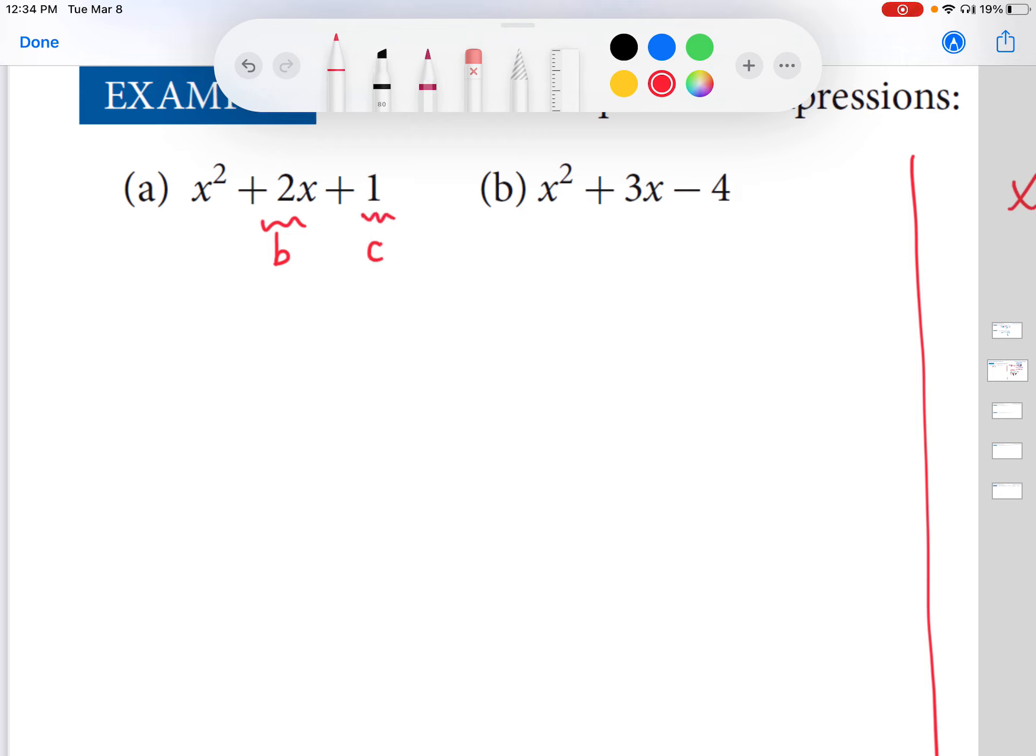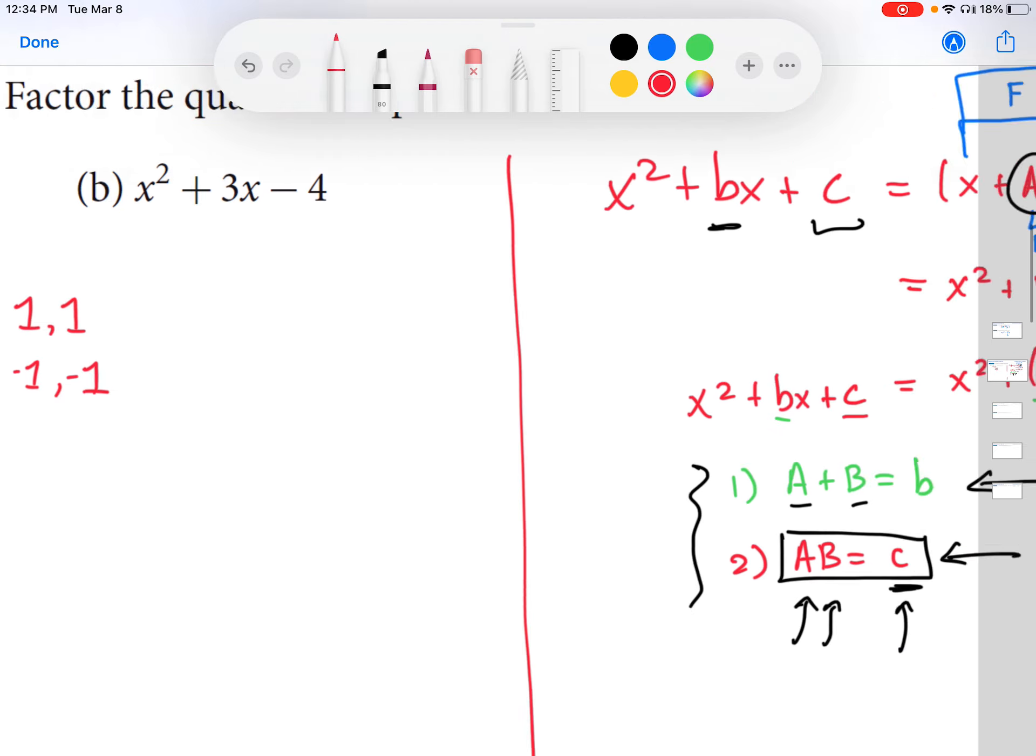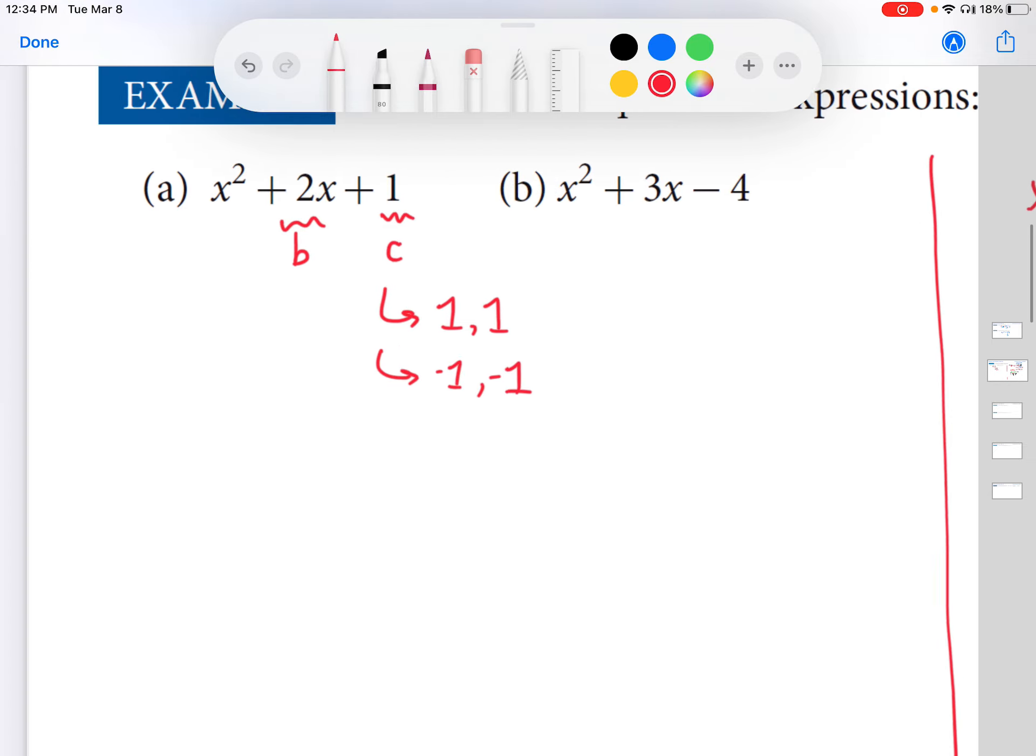So if we're looking for the factors of little c, the numbers that multiply to yield one. So that's certainly one and one. But also we can think in terms of negative one and negative one. So that's going to be important for the example later. I just want to plant the seed that you want to consider not just positive numbers, but negative ones as well. Okay, great. So we have these two factors.